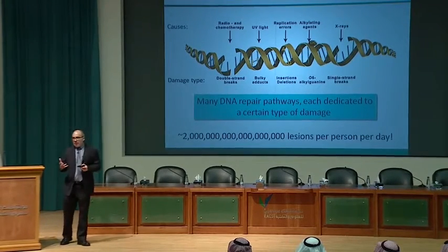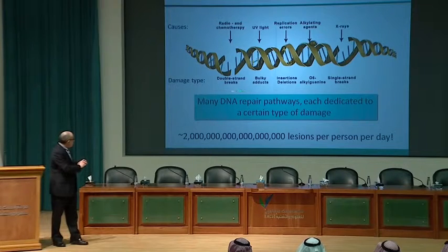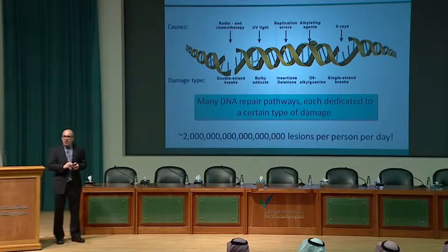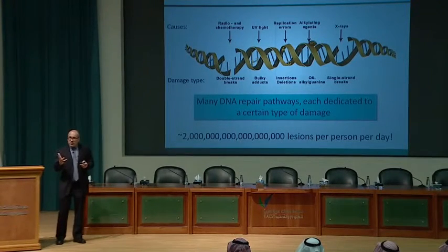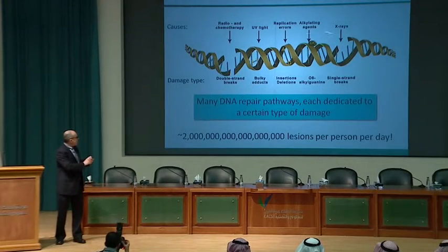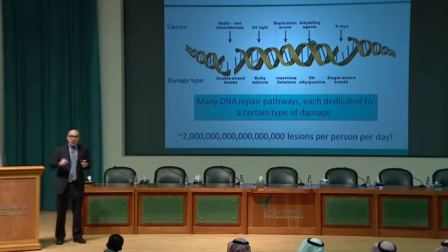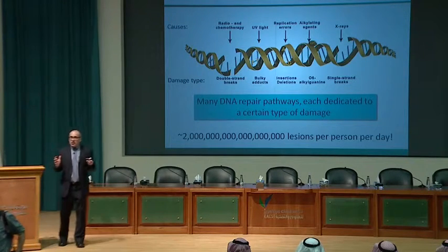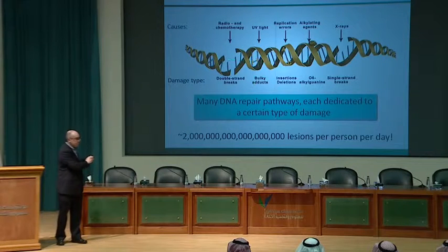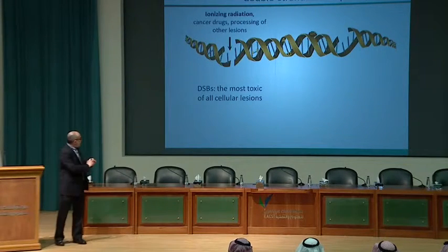Through work in my lab and many others, we've learned there are many different DNA repair systems dedicated to different forms of DNA damage. Double strand breaks — the most toxic form — are repaired by certain systems I'll discuss today. For example, ultraviolet light exposure in midday sun generates approximately 100,000 lesions per hour per cell; this damage is repaired by a dedicated system called nucleotide excision repair, which is different from the system used for double strand breaks.